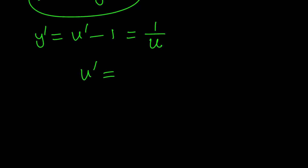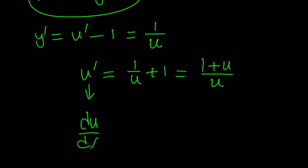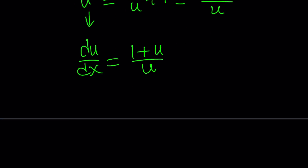Let's write u prime equals 1 over u plus 1, which can be written as 1 plus u over u. Now we're going to integrate this to find u, but first we write u prime as du over dx. From here we put the u terms on one side and dx on the other: multiply both sides by u over 1 plus u to get u over 1 plus u du equals dx.